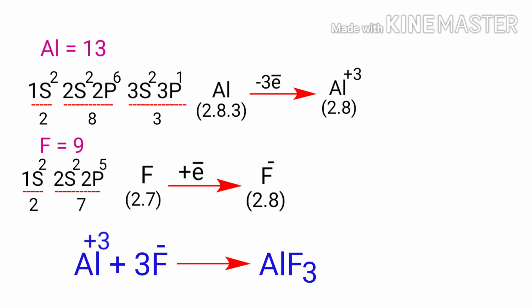In this example, aluminum will donate its three electrons to empty its shell and three fluorine atoms will accept those three electrons to fill their shells.